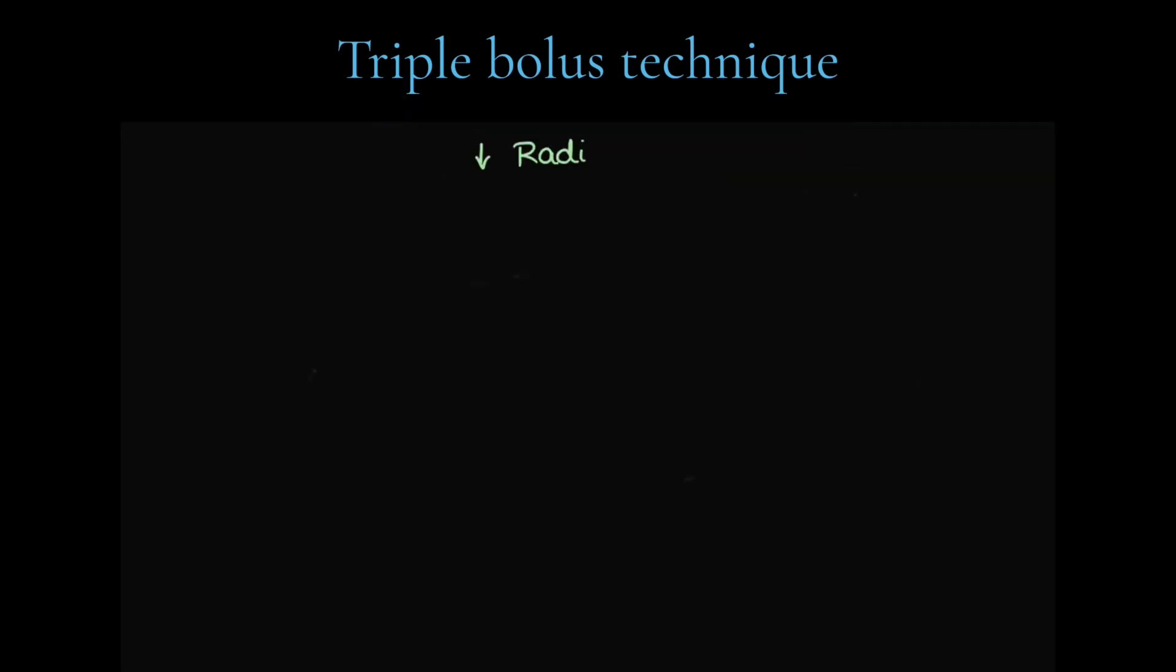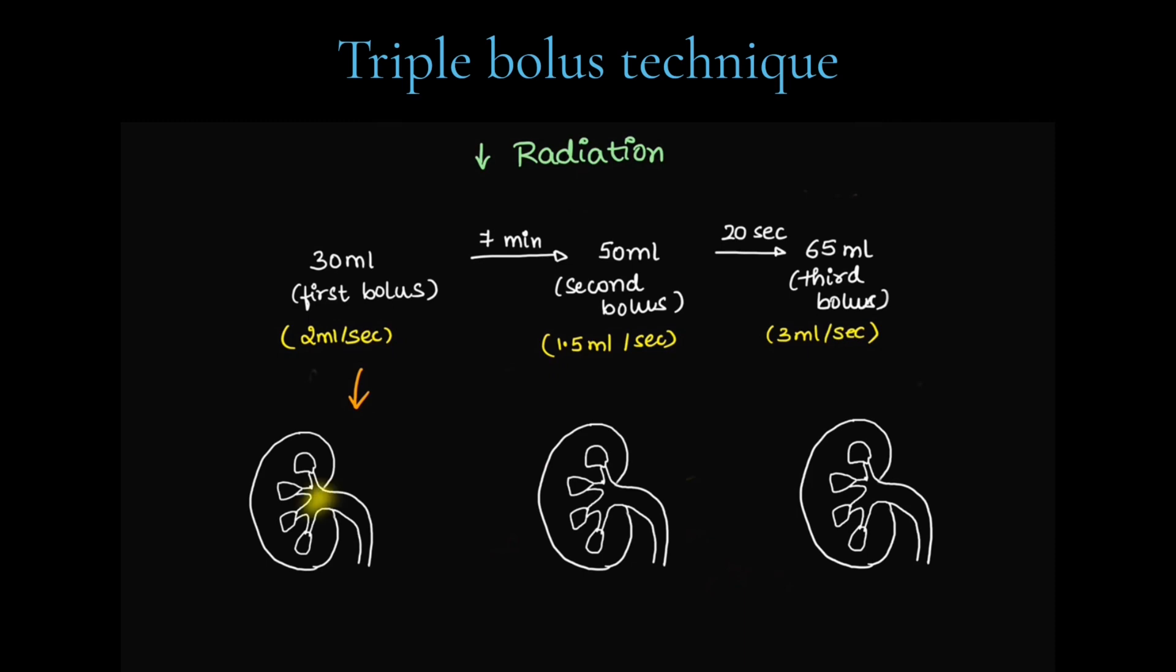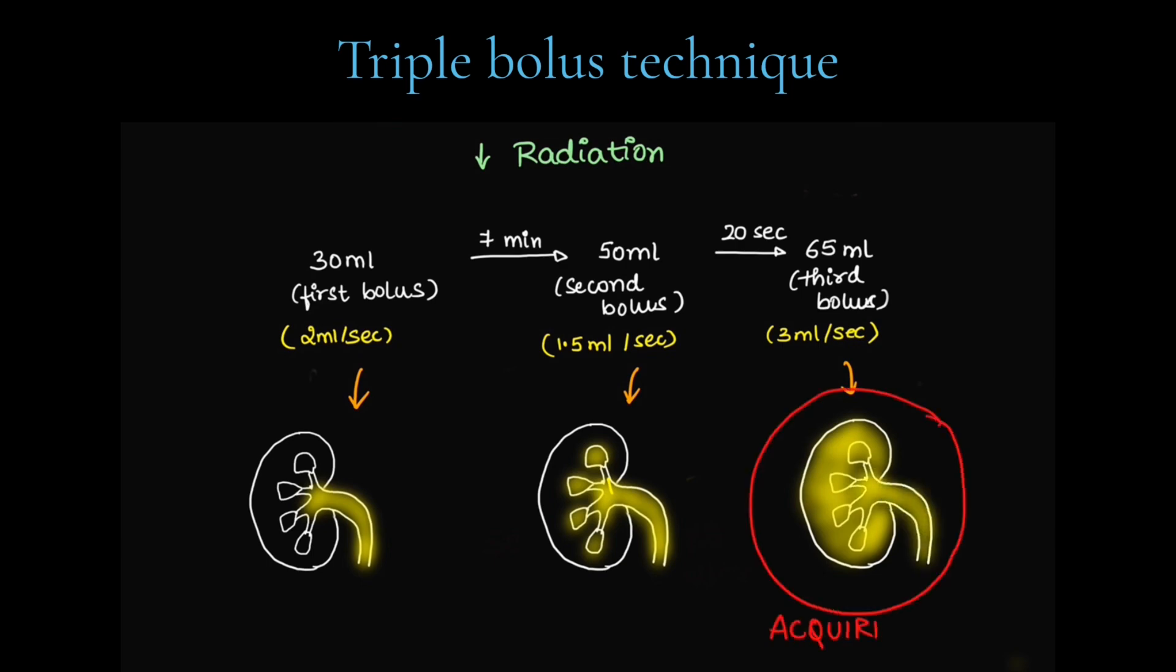In split bolus, we give 130 ml. Here, we are giving 145 ml. So, this will reduce the radiation. First 30 ml bolus, what does it do? It will reach the excretory system. Second bolus would have reached the medulla. And the third bolus would have reached the cortex. And all the three can be seen very well on this single phase which we acquire which combines corticomedullary, nephrographic and excretory phases.